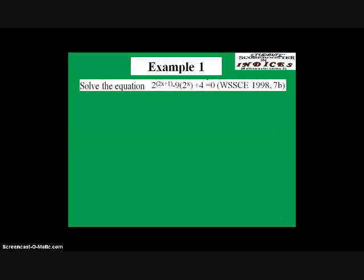We start with the first example. The example was taken from SSE 1998, question 7b. Solve the equation: 2 raised to power 2x plus 1, minus 9 into bracket 2 raised to power x, plus 4 equals 0.